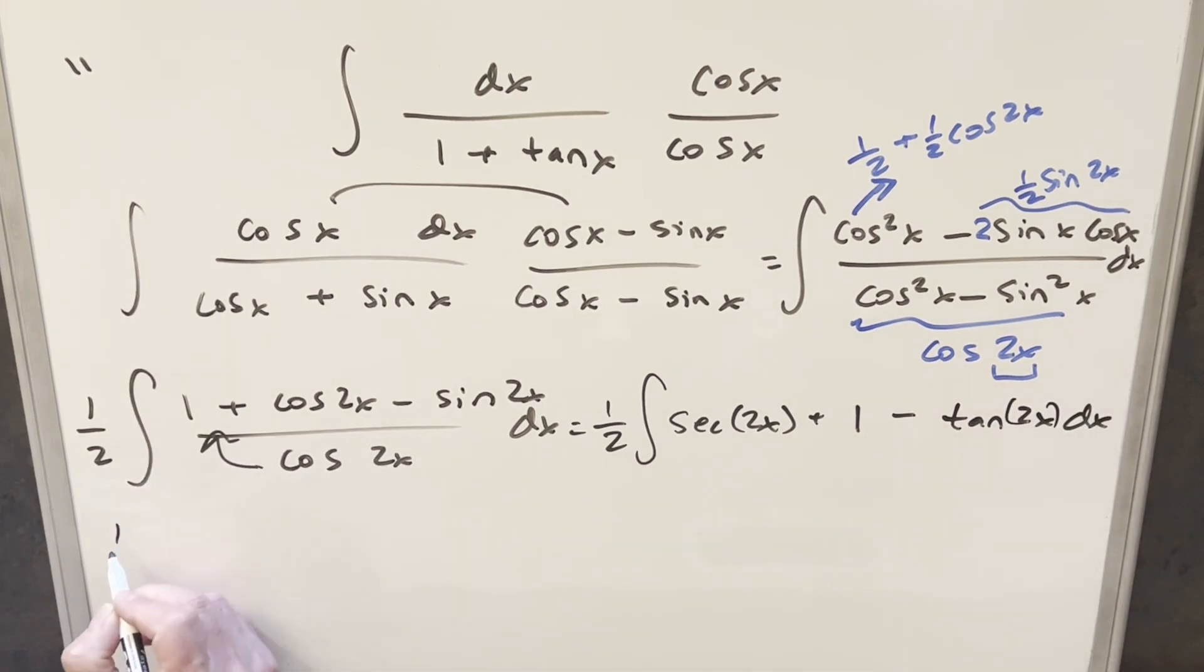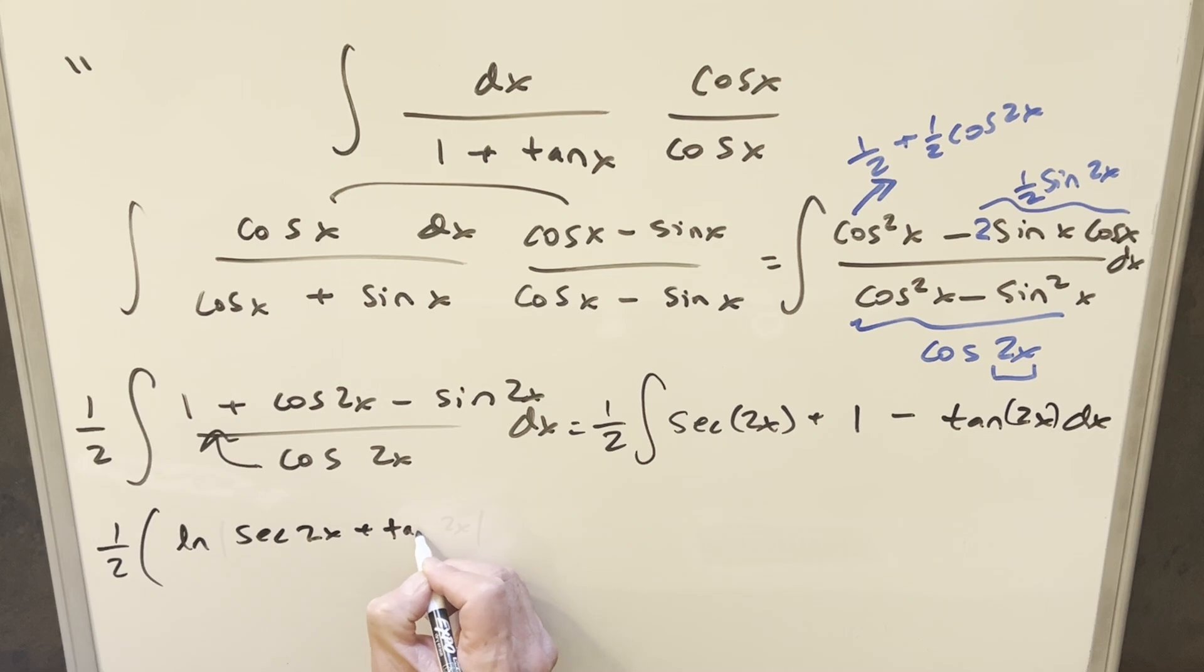But then here, this is just three easy things to integrate. We'll have this one half out front. But here, this is just going to be natural log secant 2x plus tan 2x. But then for this 2, let's bring a 2 out in the denominator.